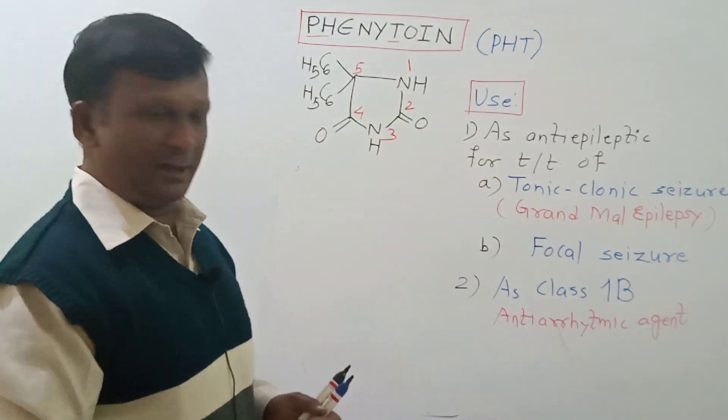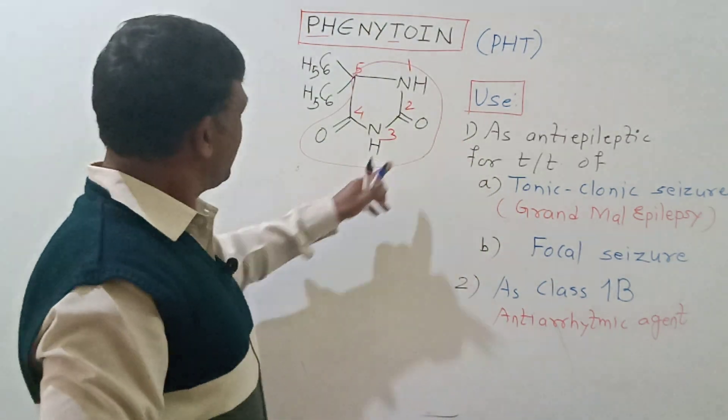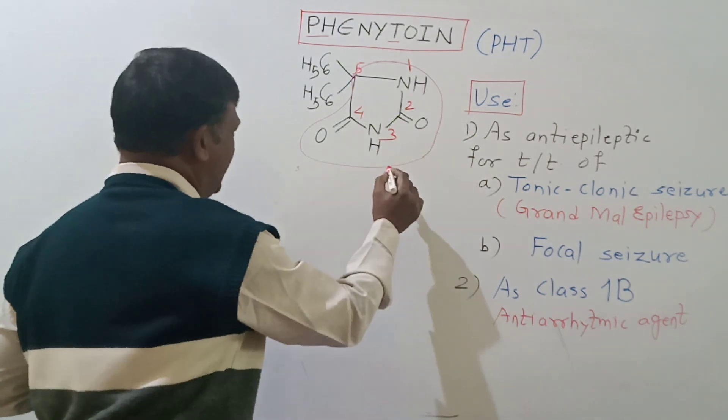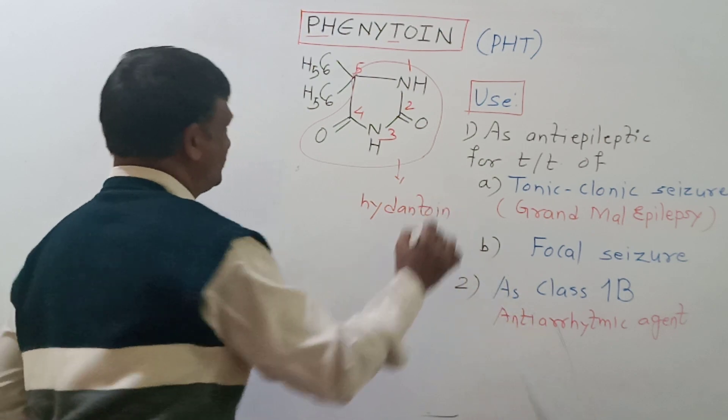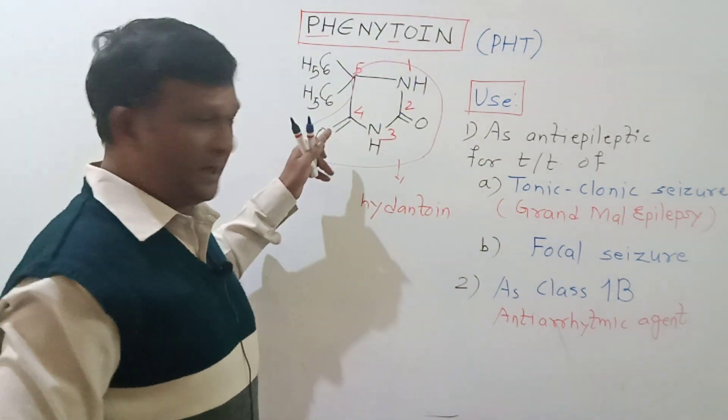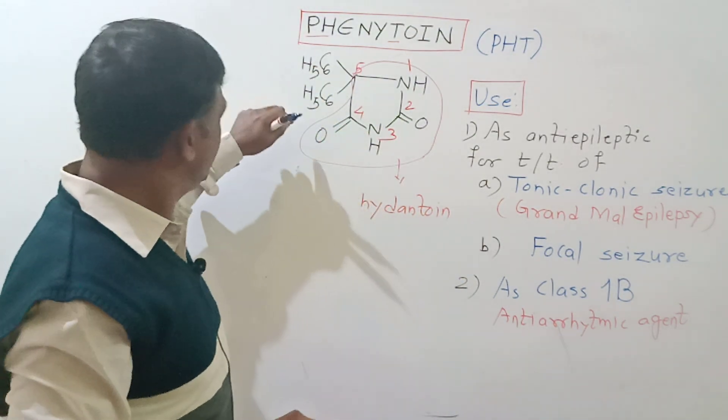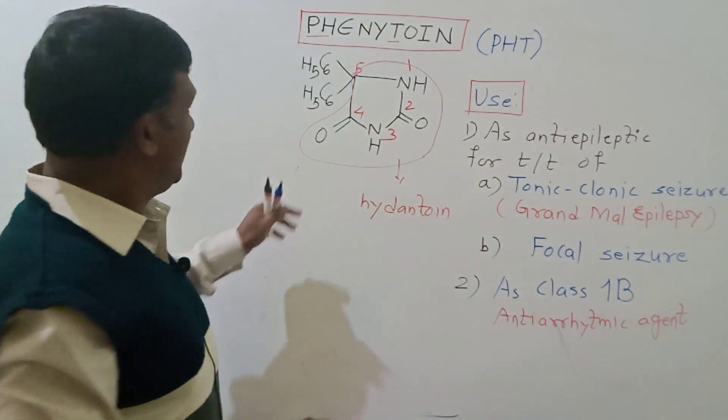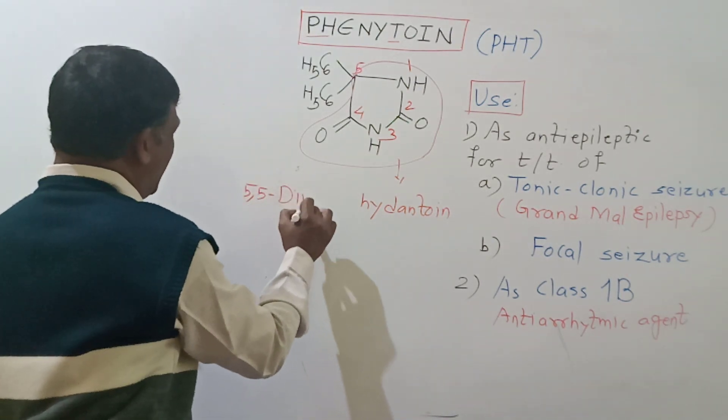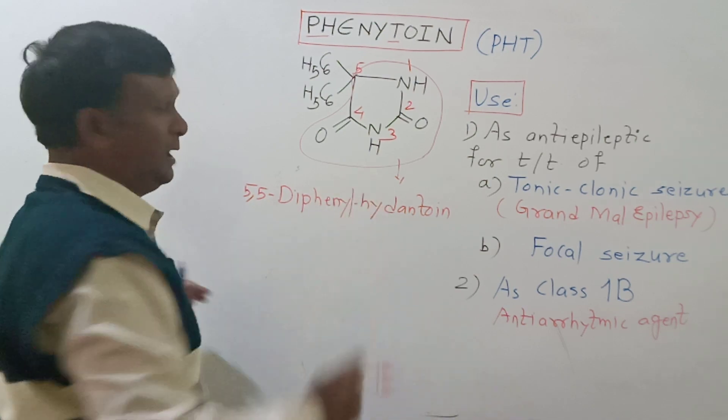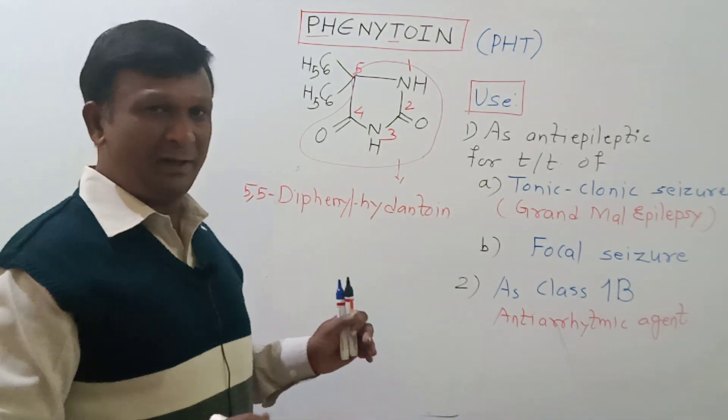If we consider this whole nucleus, it is given the name hydantoin. On hydantoin at position number five there is presence of two phenyl rings. C6H5 is nothing but phenyl, so the IUPAC name of this compound can be written as 5,5-diphenylhydantoin.